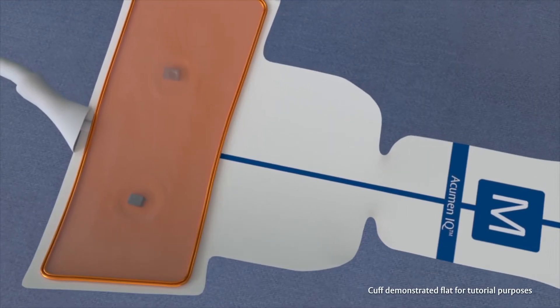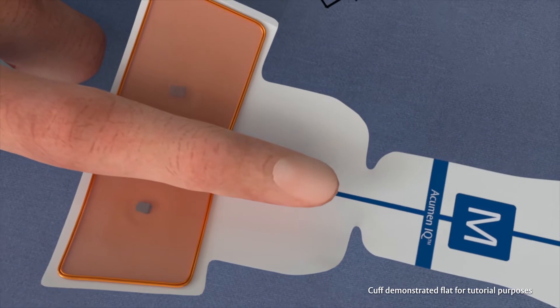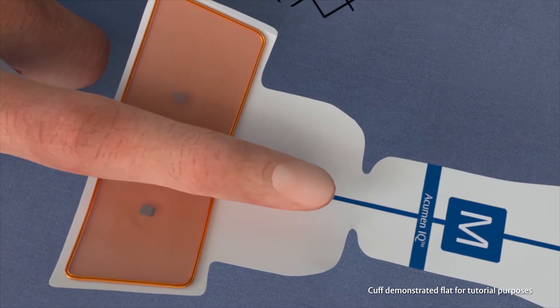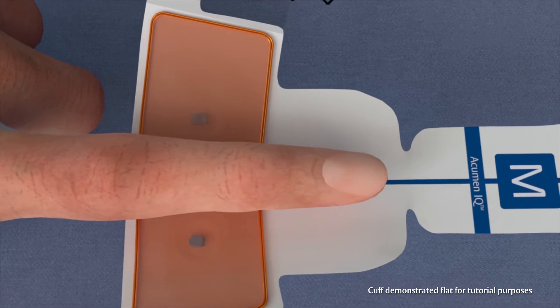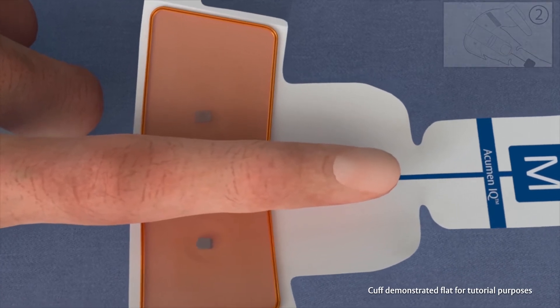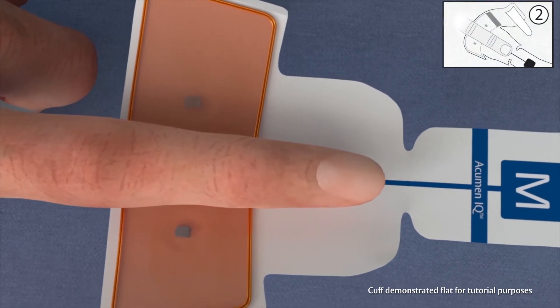Next, place the finger cuff on the middle phalanx of the sized finger. Ensure the finger cuff is centered between the second and third knuckles and the two green lines on the inside of the finger cuff.